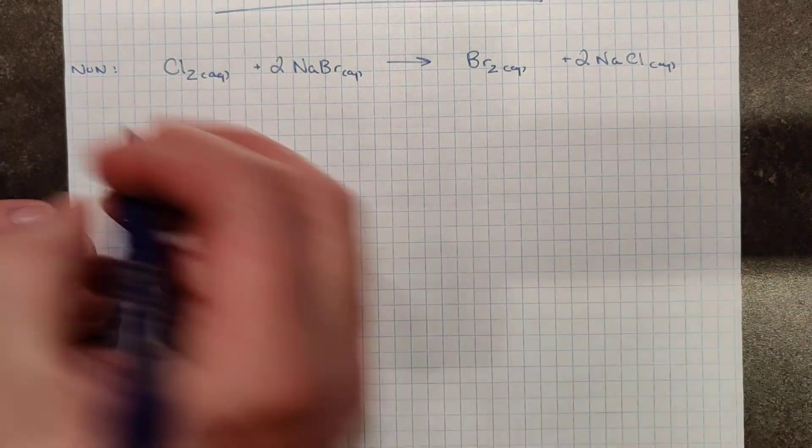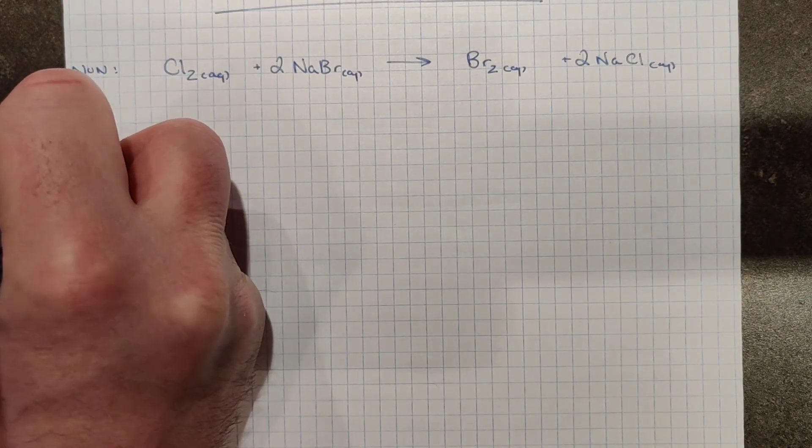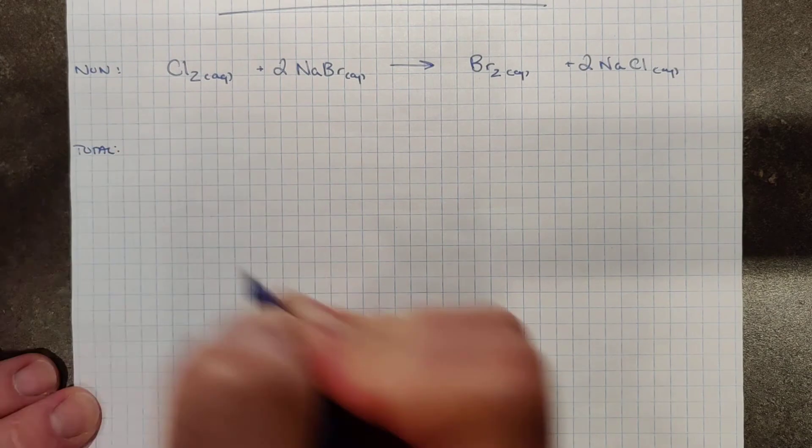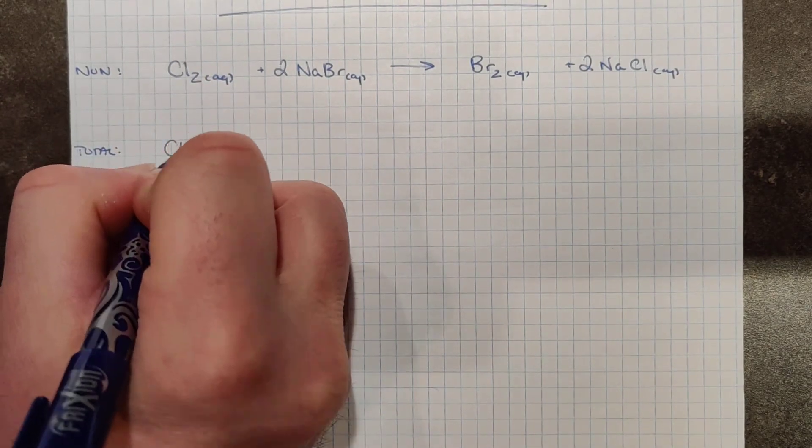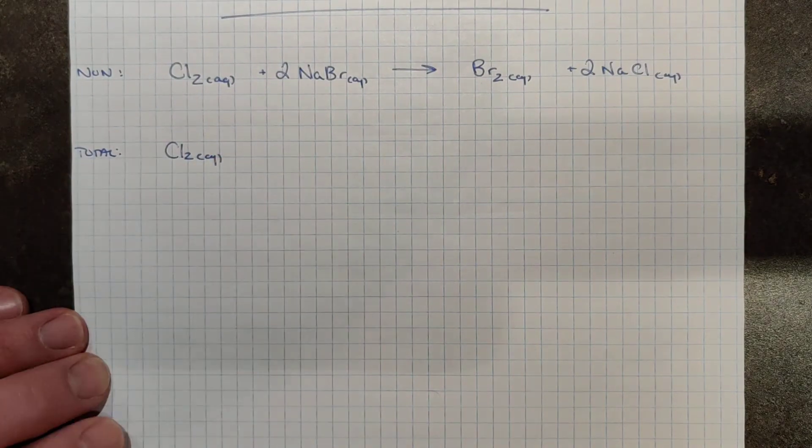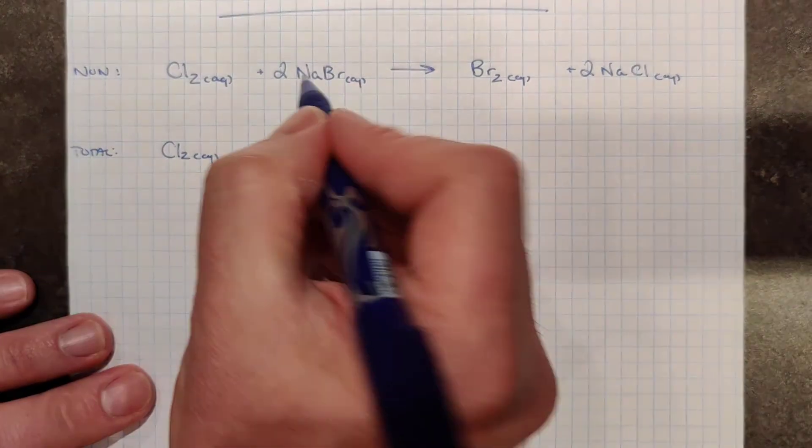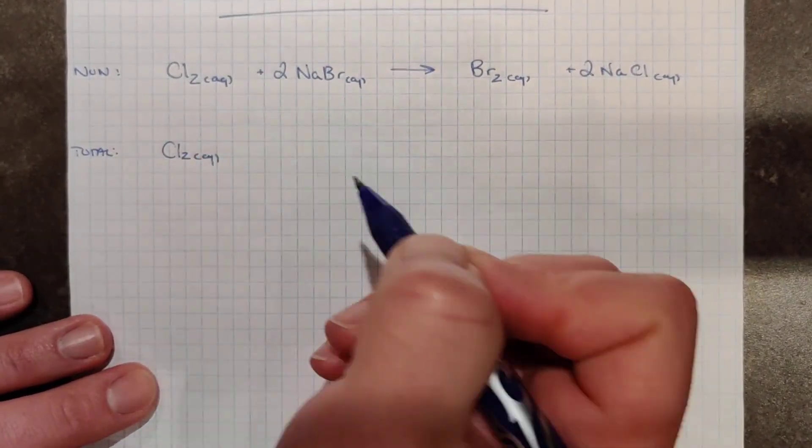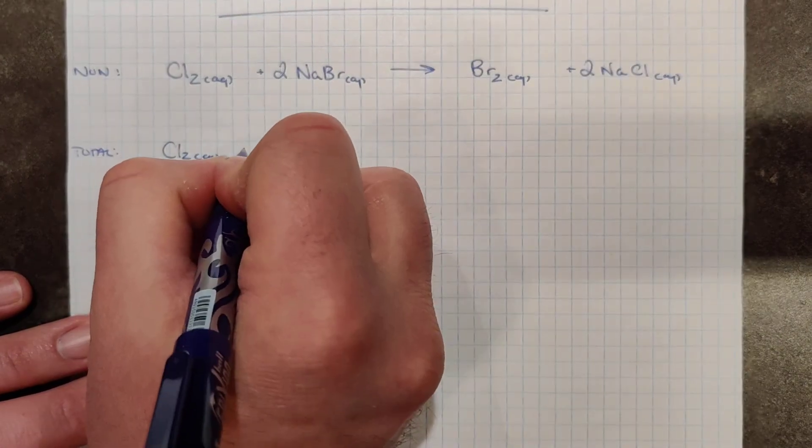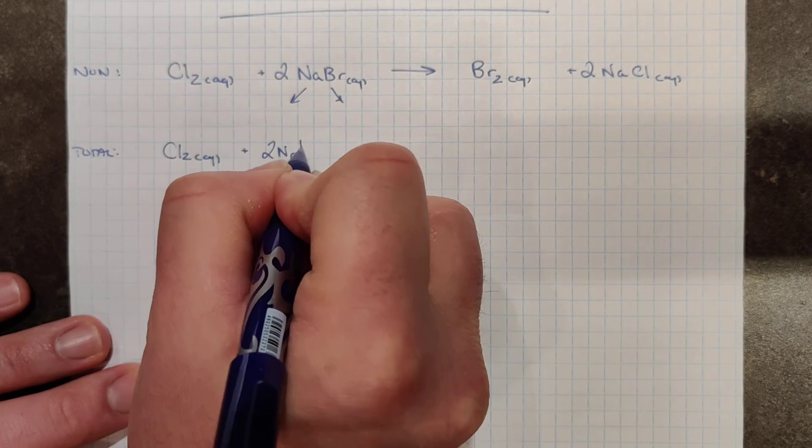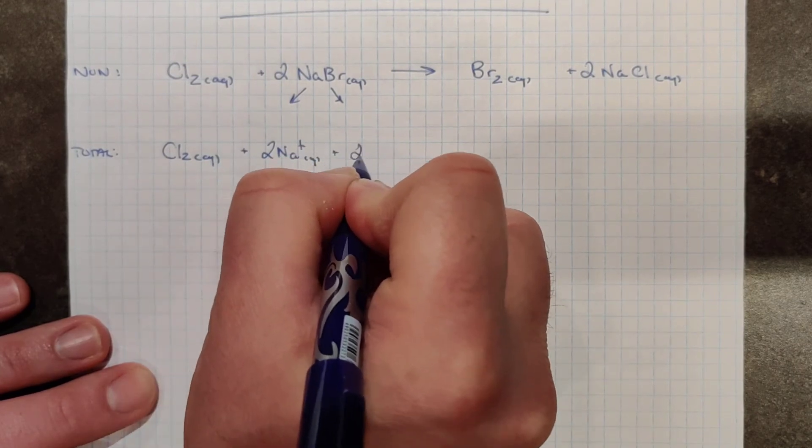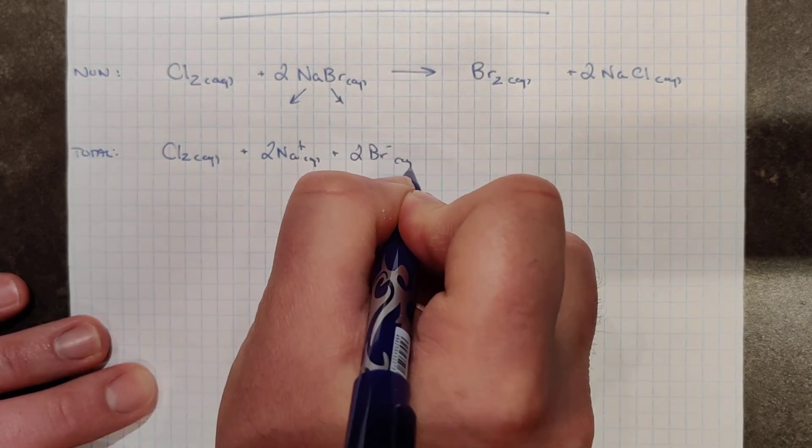Alright, welcome back guys. Here we go. Here's the total. Chlorine being elemental doesn't go through any sort of special changes in water. It's already dissolved but it doesn't form any sort of new ions unlike an ionic compound of soluble sodium bromide. So that would break apart into two Na plus ions and two bromide one minus ions.